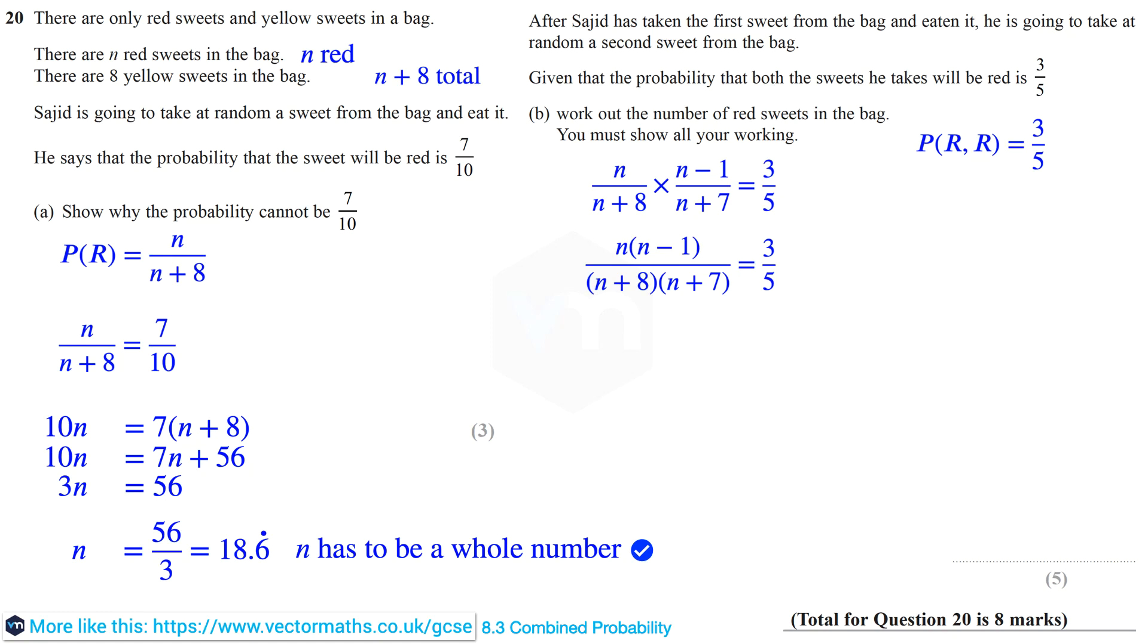Therefore N over N plus 8 multiplied by N minus 1 over N plus 7 equals 3 fifths. Now we can write this as N times N minus 1 over N plus 8 times N plus 7 equals 3 fifths. And we can expand the brackets on the top and the bottom of the fraction on the left hand side. And this reduces to N squared minus N over N squared plus 15N plus 56 equals 3 fifths.